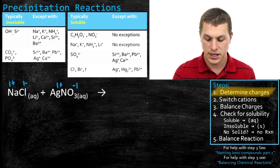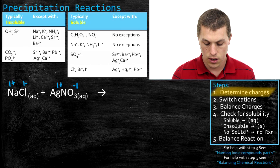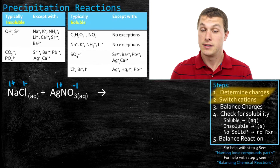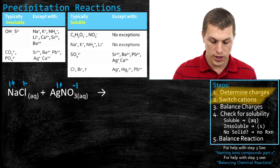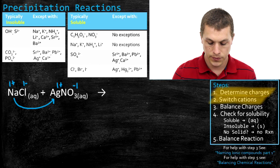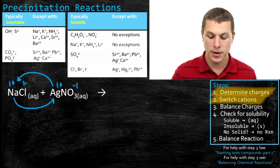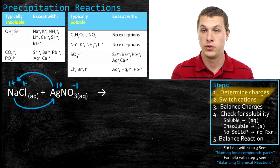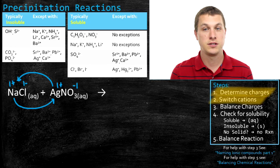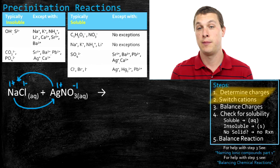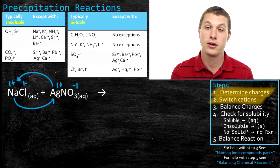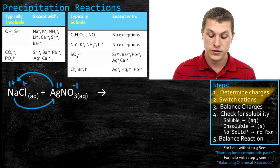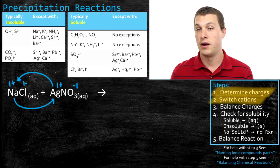Now step two is to switch the cations. We have two cations: sodium is positively charged and silver is positively charged. I'm going to take sodium and put it where silver is, and take silver and put it where sodium is. Basically, I'm testing all the different types of compounds that could form. The only compounds that can form still pair a positive charge with a negative charge — you can't have two anions or two cations. So this is the only switch that makes sense.